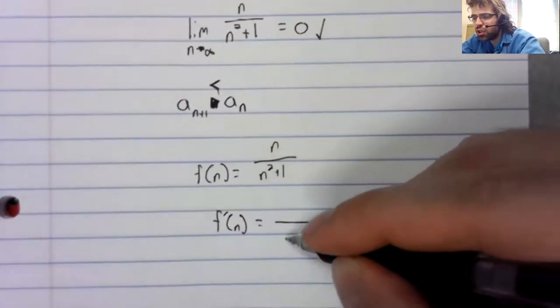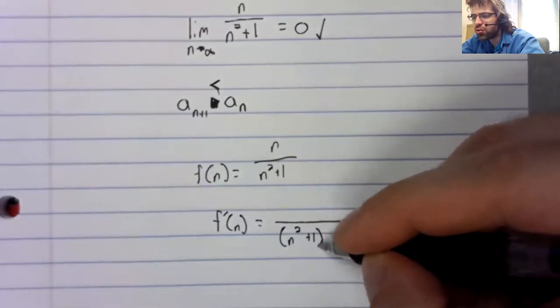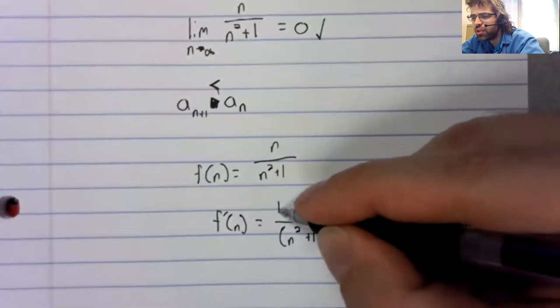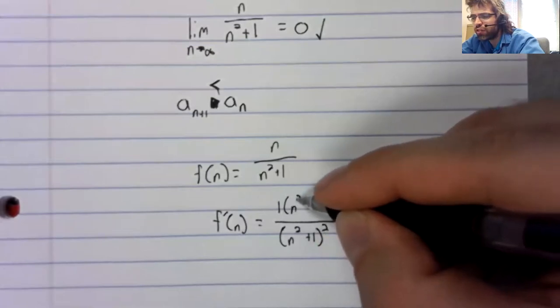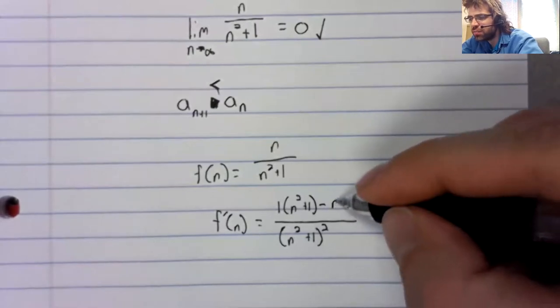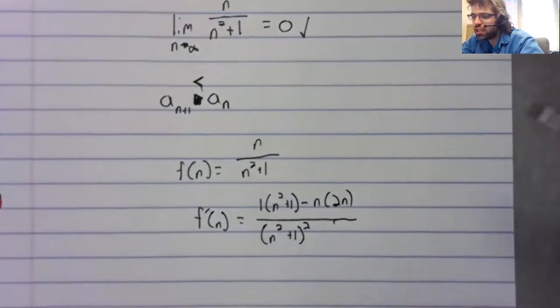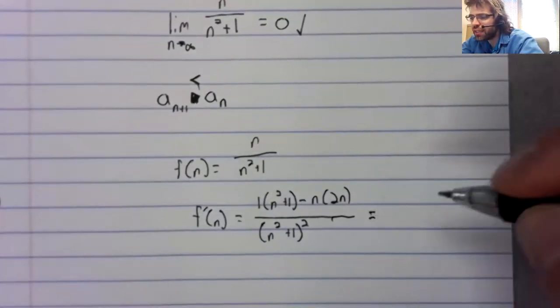This is a calculus one exercise. For a function to be decreasing, its derivative needs to be negative.